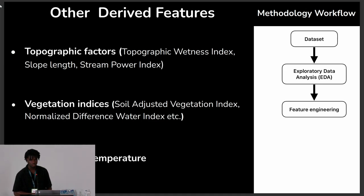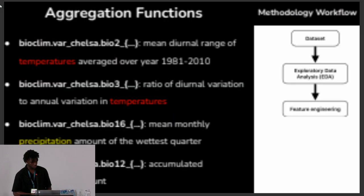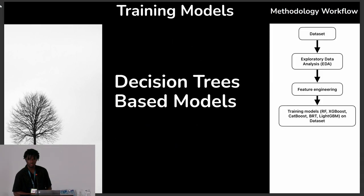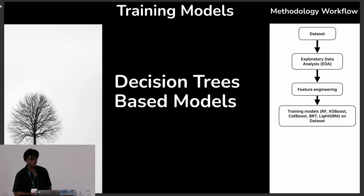Other derived features included topographic factors, vegetation indices, and land surface temperature. We also used aggregation functions such as minimum, maximum, mean, standard deviation, and skew. For variables with similar nomenclature, such as temperature appearing in multiple features, we took the mean of the values. For model training, we used decision-tree-based models because previous literature shows they are quite efficient for mapping soil erosion.